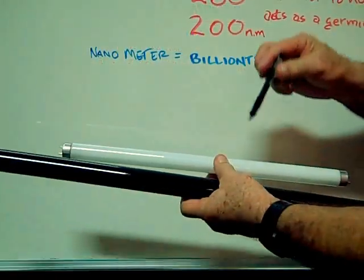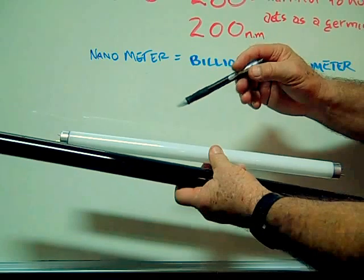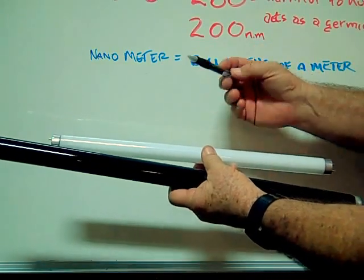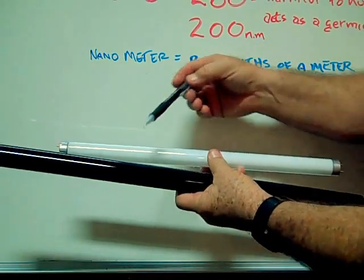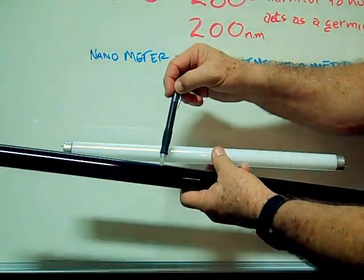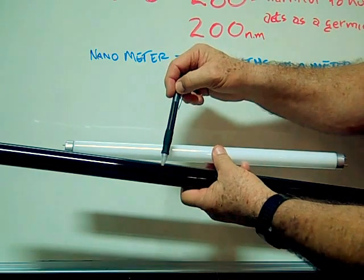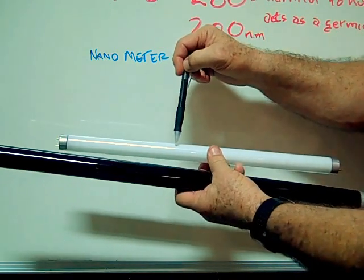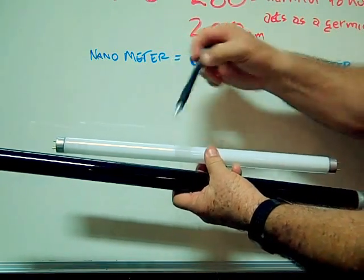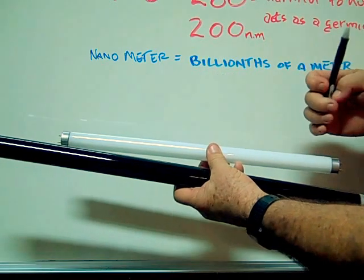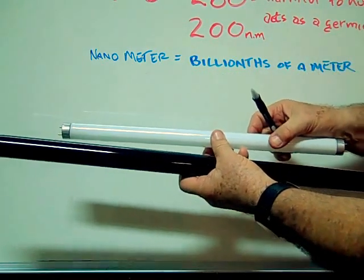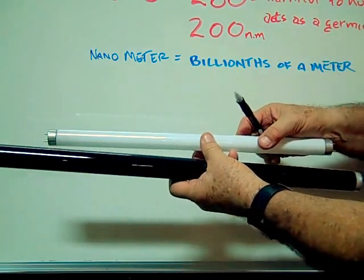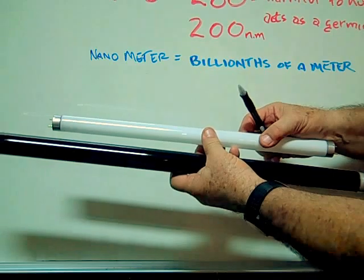These are examples of UVA light generators. This is an example of a black light blue, and this is just a black light. They both emit the same 320 to 380 nanometer range.